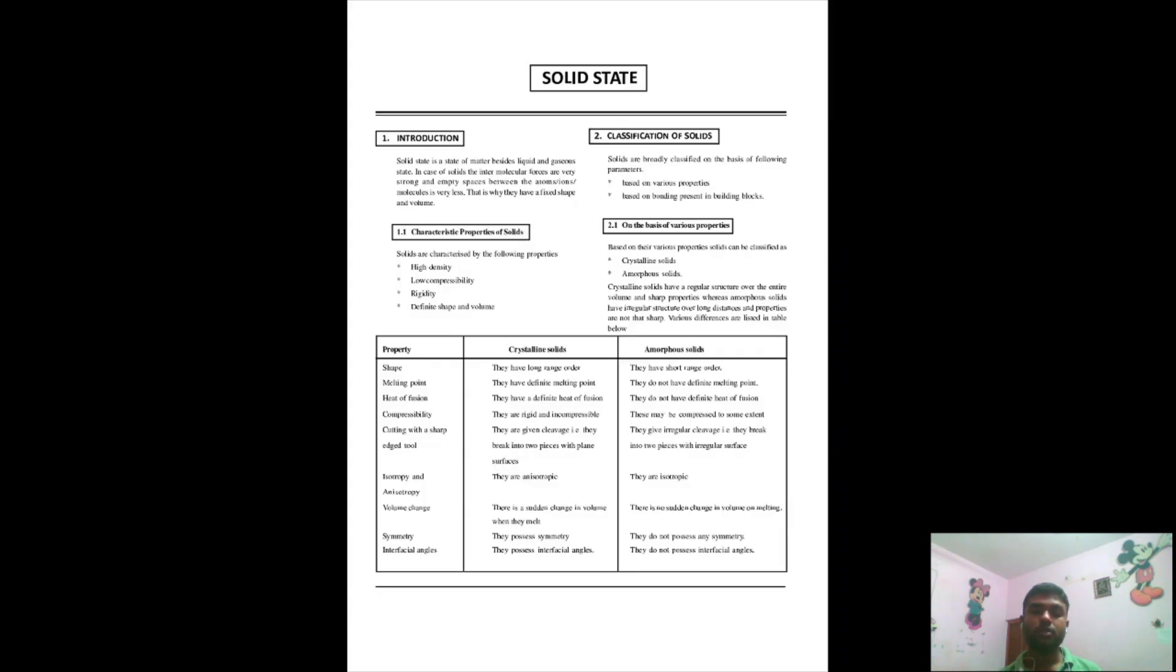On the first page, as you can see, we have introduction, characteristic properties, classification, and the various properties which are used to classify solids. You can read through this table to increase your comprehension and understanding of this chapter. The properties like shape, melting point, heat of fusion, and how they are different for crystalline solids and amorphous solids - the basic difference between crystalline solids and amorphous solids. I'm sure you guys all know that.